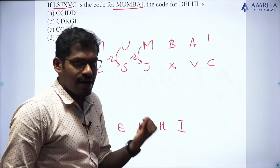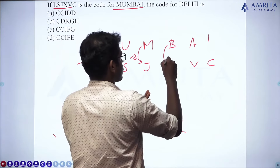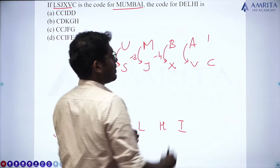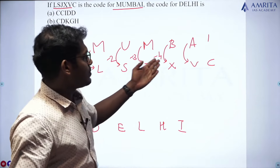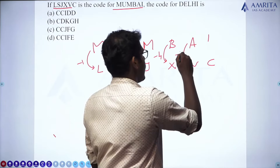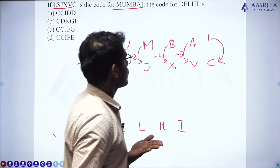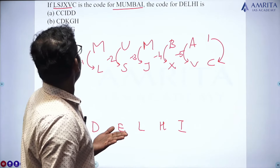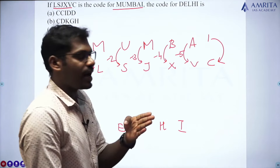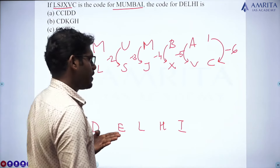For the next letter: X corresponds to A — checking S, T, U, V, W, X, Y, Z, A — so A minus something gives the pattern. For I, C, D, E, F, G, H, I — we can write I minus 6 is C. By using this logic, we can code the term Delhi.